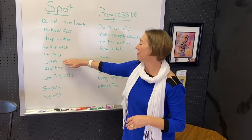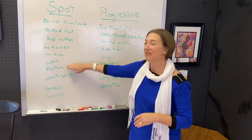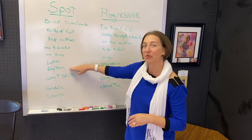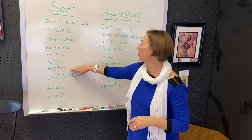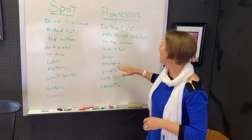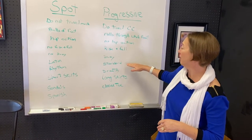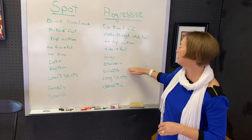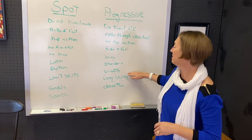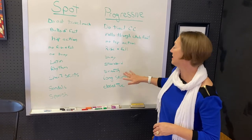Spot dances are associated with the Latin and rhythm categories in ballroom competitions. Progressive dances are associated with the standard and smooth dance categories.